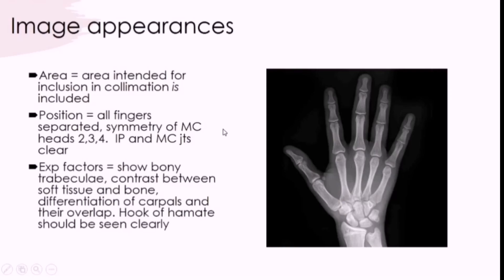Once we've done that, we need to look at the image to confirm everything required is included — the borders of the hand, all of the fingers, and the distal third of the radius and ulna. To check positioning, you look for the fingers being separated, the metacarpal heads in positions two, three, and four being symmetrical, and all the metacarpophalangeal and interphalangeal joint spaces being visible.